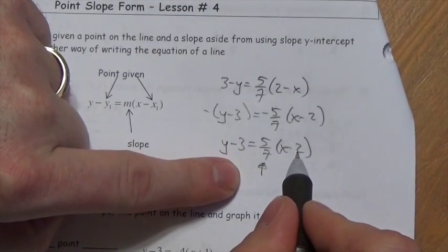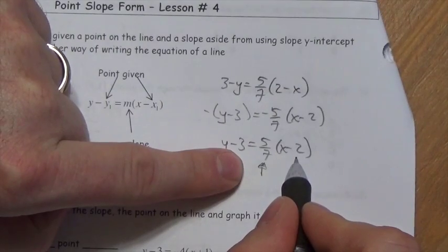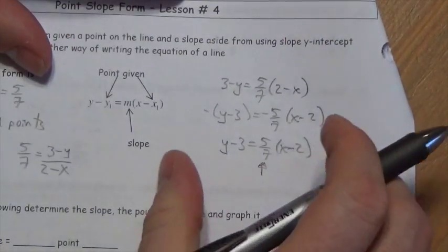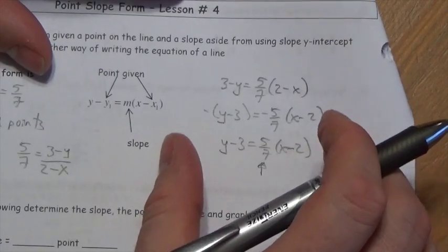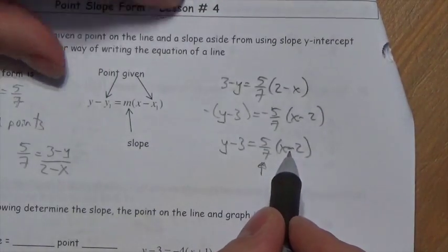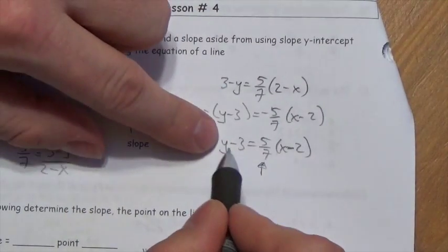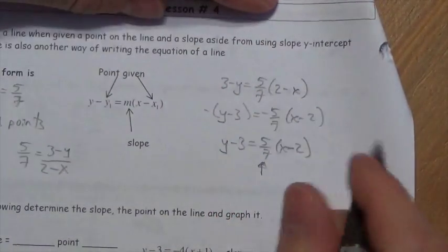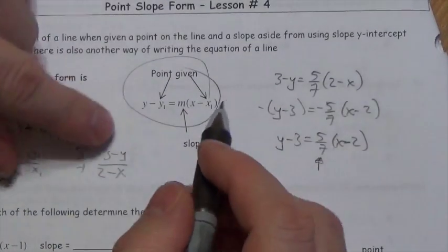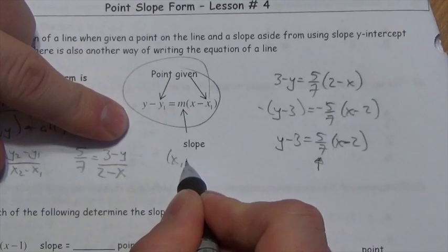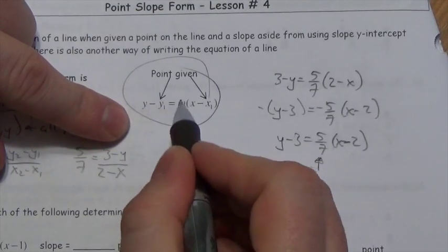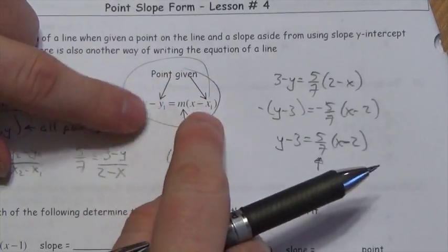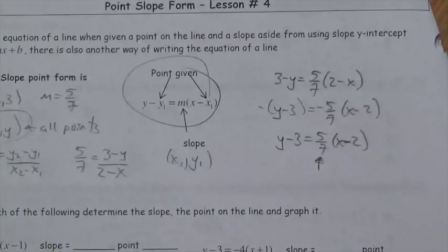My point is (2, 3). You might look at this and say that's negative 2 and negative 3 in the equation, but think about where we got this from — the slope formula, which uses subtraction. Think of it as x minus positive 2, y minus positive 3, giving the point (2, 3). In general, the point (x₁, y₁) is a specific point on the graph, and the formula is y minus y₁ equals slope times x minus x₁. It's directly related to the slope equation.